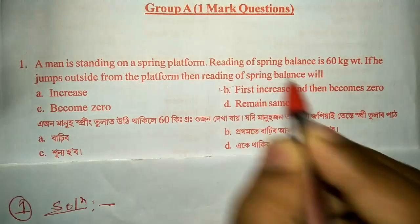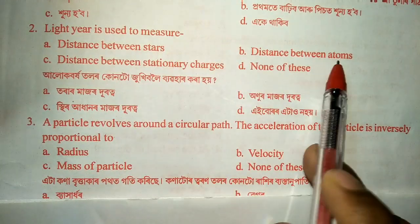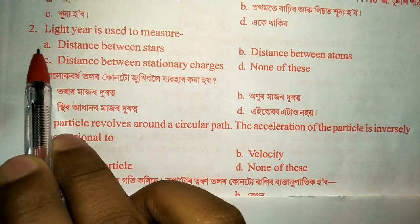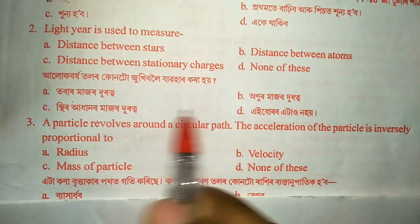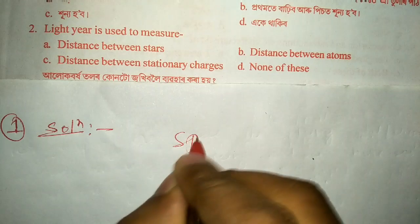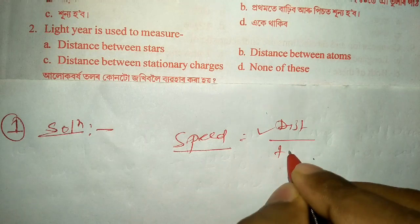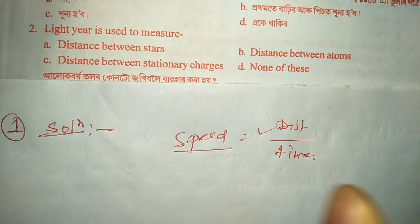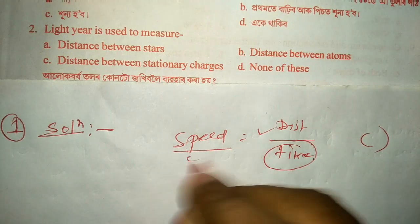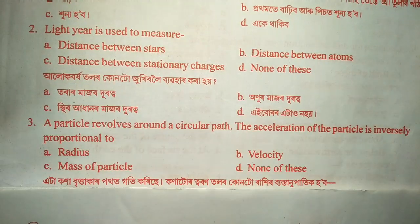Question number two: light theory is used to measure distance between stars, distance between atoms, distance between stationary charges, or none of these. The correct option is A — distance between stars — because we know the speed of light, and using the formula distance equals speed multiplied by time, when light travels from one place to another we get the time, and from that we can calculate the distance.